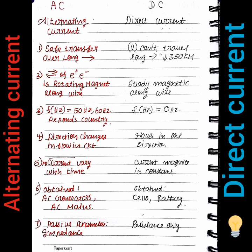For passive parameters, in AC there is RLC — resistance, inductance, and capacitance effects. For DC, there is only the resistance effect.